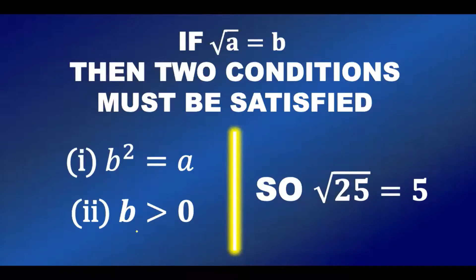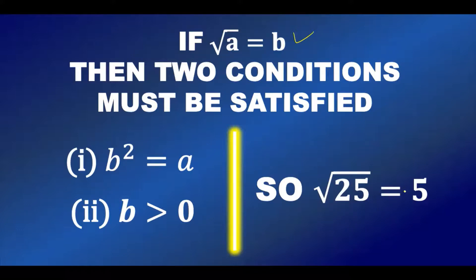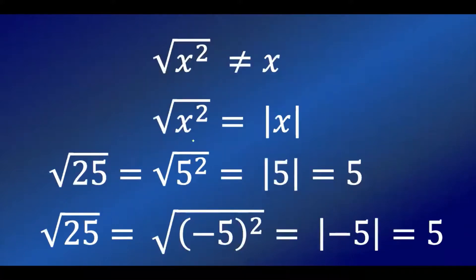If you want the definition: √a = b means two conditions must be satisfied — b² must equal a, and b must be positive. So if you find the principal square root of 25, you get 5, because not only is 5² = 25, but 5 is also positive. That is the definition.